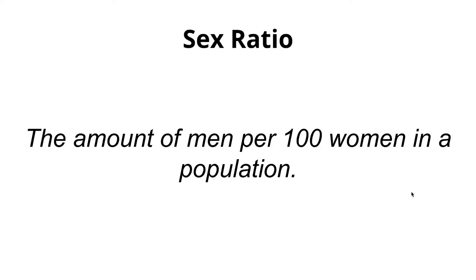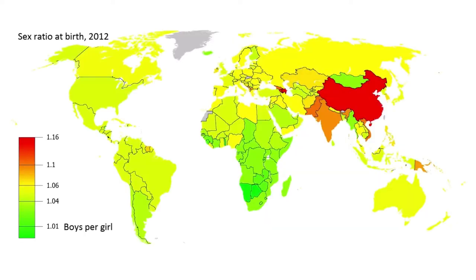Sex ratio is the amount of men per 100 women in a population. Here is the sex ratio at birth in 2012, and as you can tell, the highest numbers are in China, India, and parts of South and East Asia, while the lowest are in North and South America, Australia, and Russia.